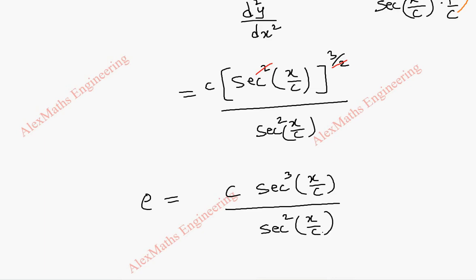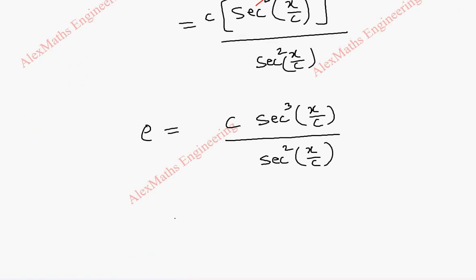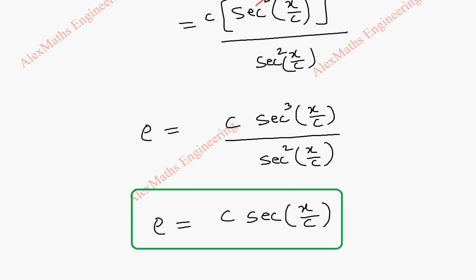After canceling, we are left with only secant in the numerator. So ρ is c times sec(x/c). This is the required radius of curvature.